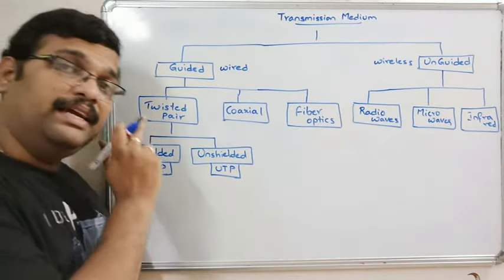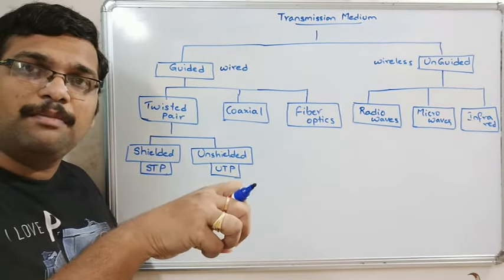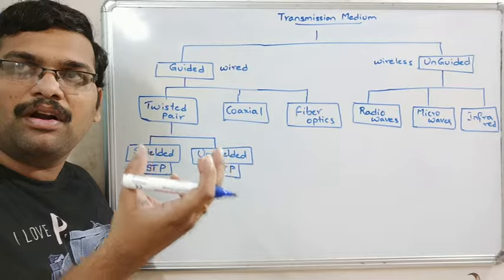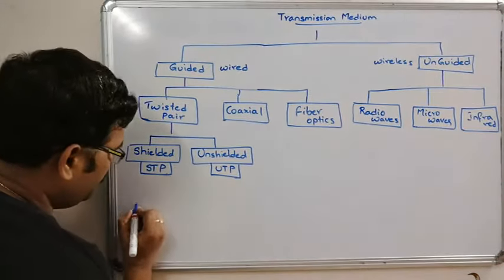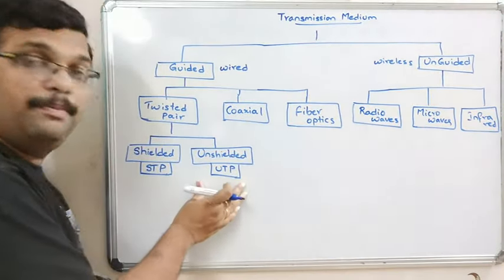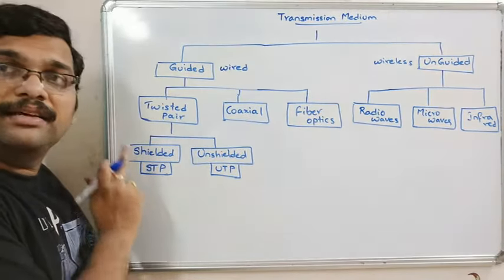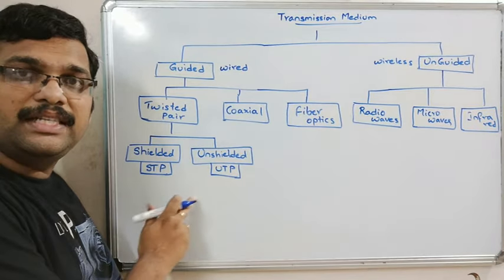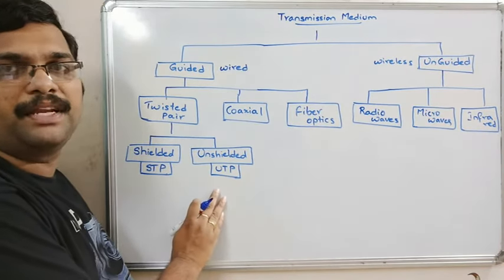Shielded twisted pair is also a pair of copper wires in a twisted manner, but these cables are enclosed with a mesh or foil as shielding. The data rate is high compared to UTP, but it is more expensive and somewhat difficult to install compared to unshielded twisted pair cables.